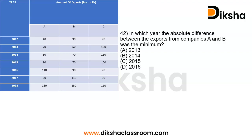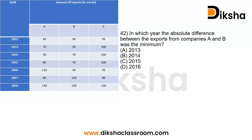The last question: in which year was the absolute difference between the exports from companies A and B minimum? Since there are only four options — 2013, 2014, 2015, and 2016 — we check each: in 2013, 70 minus 50 equals 20; in 2014, 70 minus 50 equals 20; in 2015, 80 minus 70 equals 10; in 2016, 110 minus 90 equals 20. In the year 2015 the absolute difference is 10, which is the minimum. So the answer is 2015, option C.